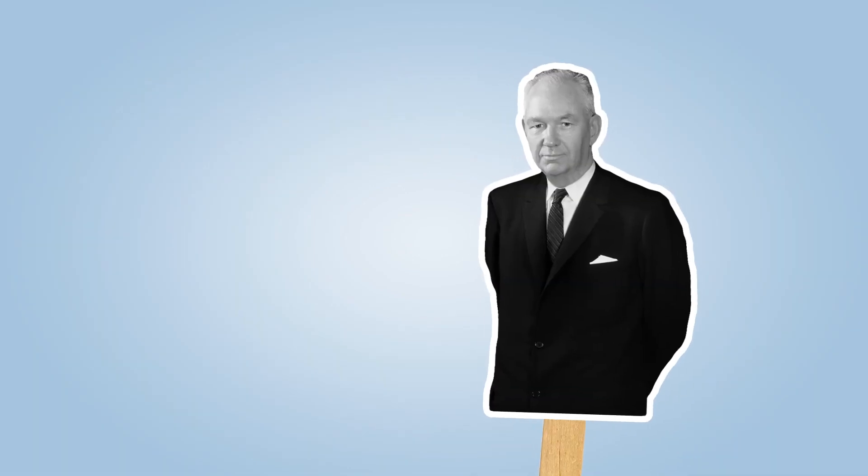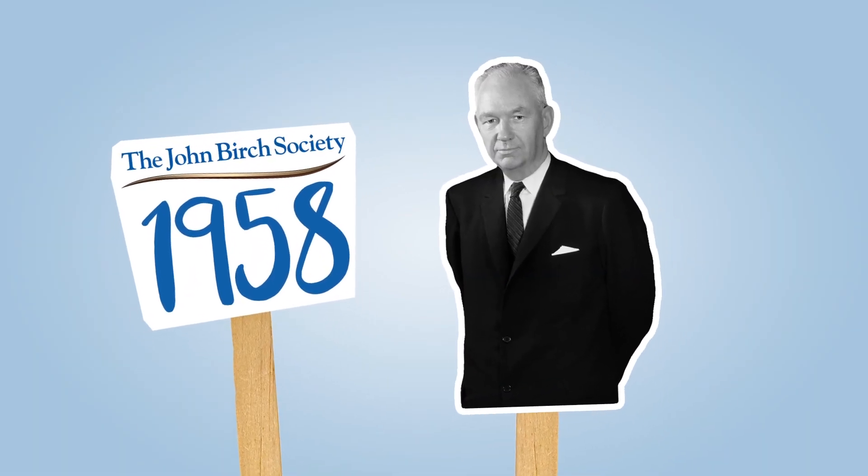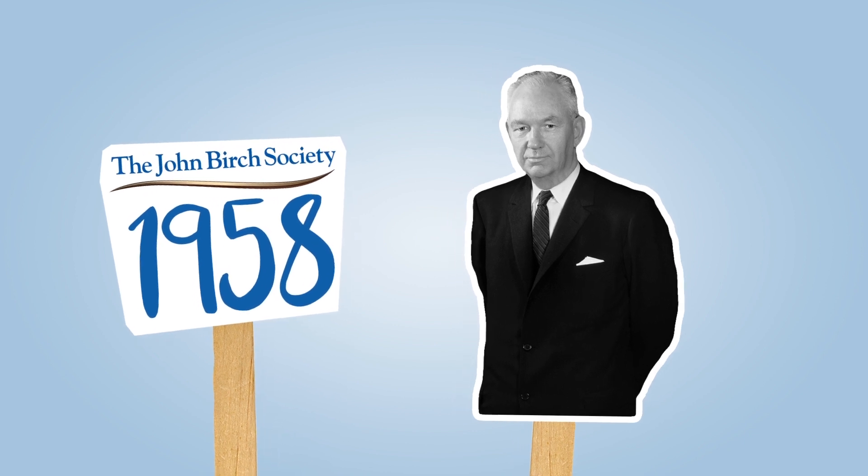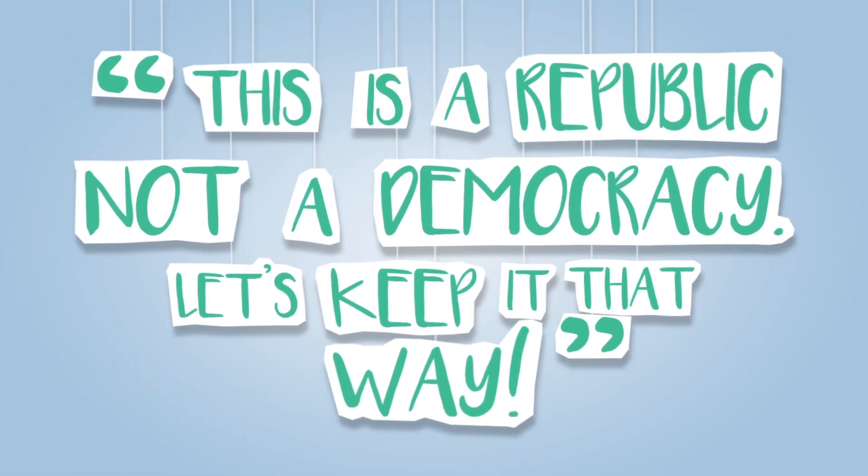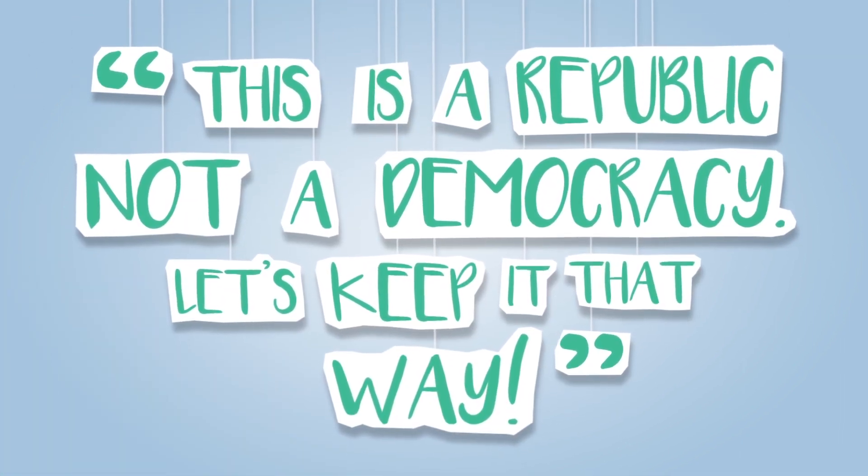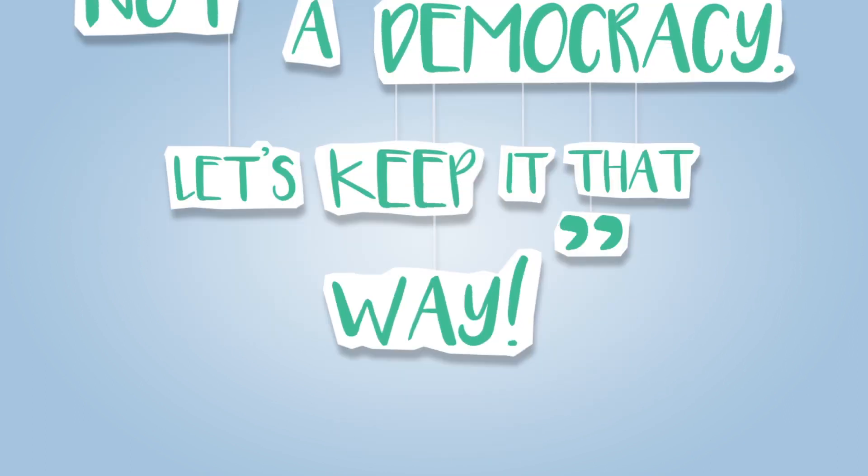A man named Robert Welch founded the John Birch Society in 1958. He believed the only way America could maintain its sovereignty and freedom was by promoting less government and more responsibility. He also believed that this would require exposing the socialists, communists, and other collectivists who always work for more government and less responsibility. His ideas quickly gained support and members. And with this growing momentum, the society began to attract national attention.